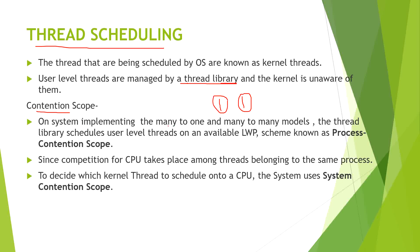On systems implementing the many-to-one and many-to-many models — as discussed in previous videos — there are user threads and kernel threads. Many user threads execute on one kernel thread, which is the many-to-one model. For the many-to-many model, it is an m-to-n model. For lightweight processes, a scheme known as process contention scope (PCS) is implemented to decide which process thread is to be executed. The competition is among threads which belong to the same process.